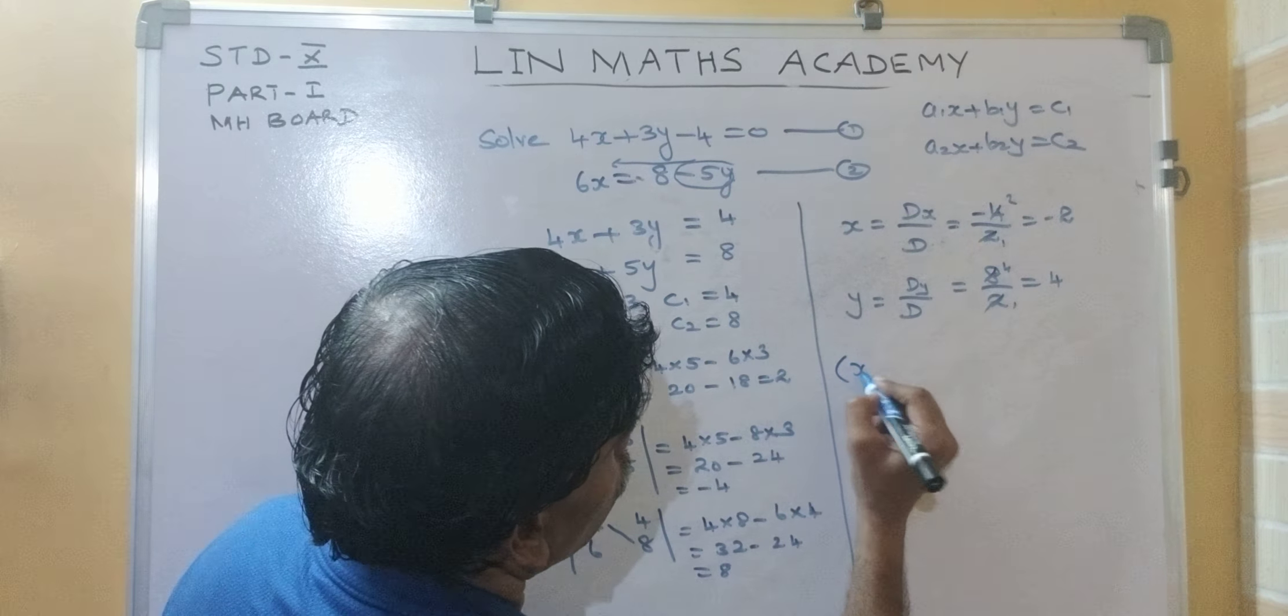So, 4 into 28 minus 3 into 54 is equal to 112 minus 162 equal to minus 50.